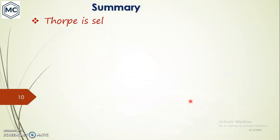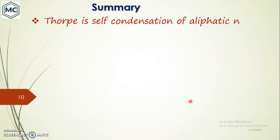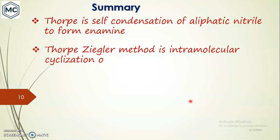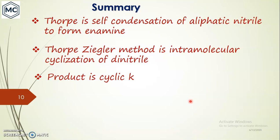To summarize: Thorpe condensation is exactly like an aldol condensation — it is a self-condensation of aliphatic nitriles to form an imine. The Thorpe-Ziegler method is intramolecular cyclization of dinitriles, and the final product is a cyclic ketone, usually obtained after hydrolysis. That's all about Thorpe-Ziegler condensation. Thank you for watching.